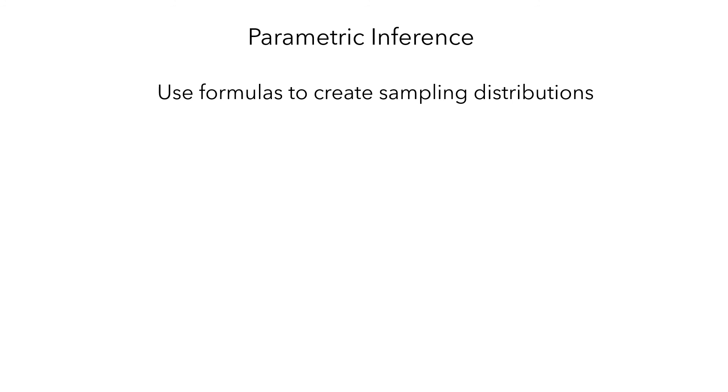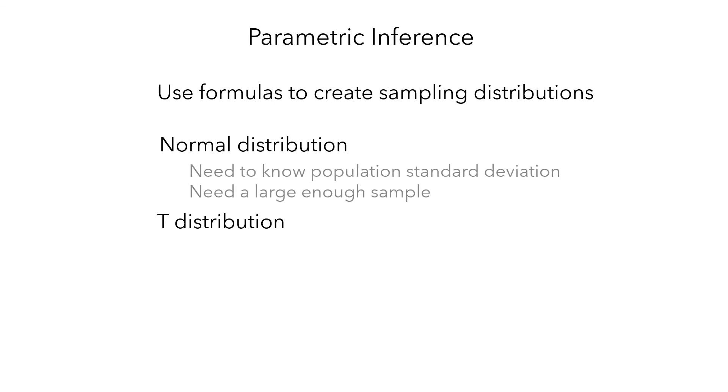We looked at two types of parametric distributions, the normal distribution and the t-distribution. They both have rather complicated formulas, and you need your statistical software to perform computations with them. To use the normal distribution, you need to know the population standard deviation, and need to have a large enough sample.